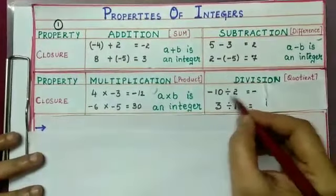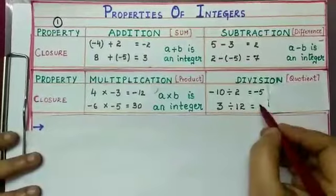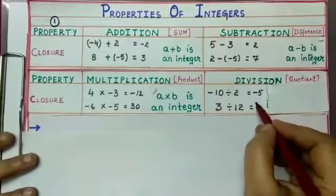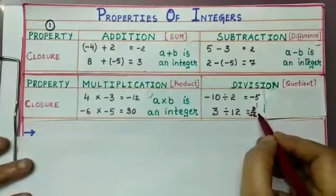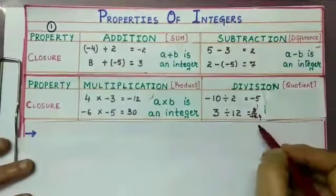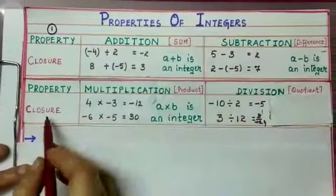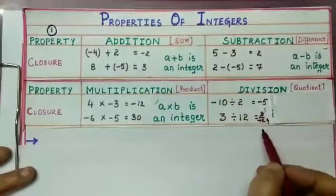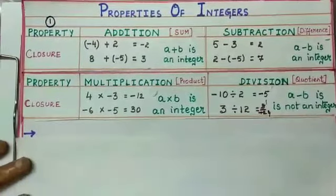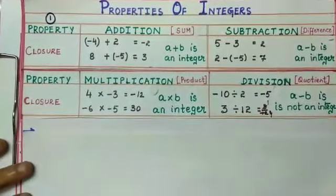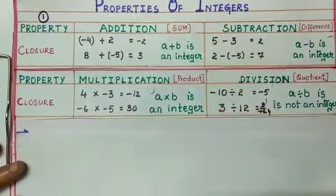Let us check closure under division: minus 10 divided by 2 is minus 5, which is an integer. But 3 divided by 12 equals 1 by 4, which is not an integer. So integers are not closed under division. Generally, for any two integers a and b, a divided by b is not necessarily an integer.